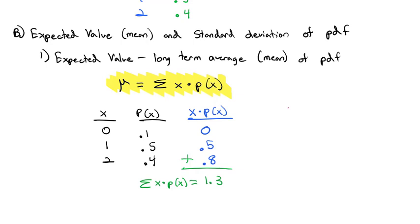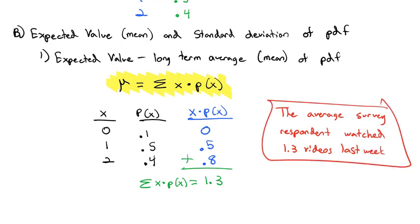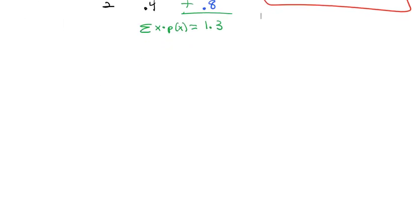This tells me that the average student or survey respondent watched 1.3 videos last week. The expected value. If I took a whole bunch of students over and over again, I would expect the average to be 1.3.